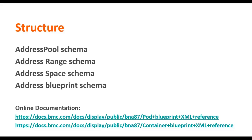At a high level, there are four types of schemas available that can be used in pod and container blueprints. To begin with, an address pool represents a pool of IP addresses. Pod level address pools take values during the pod creation. Container level address pools are derived from an address range blueprint or an address space blueprint defined in the container blueprint.